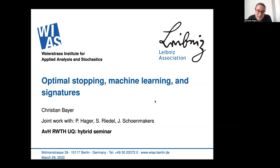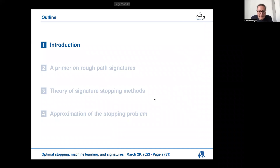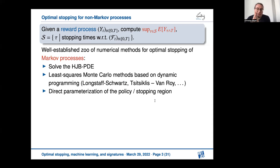The topic of this talk is to use signatures for optimal stopping problems. I also want to give an introduction to the topic of signatures itself, and in particular in the context of machine learning. As a kind of introduction, what are we trying to do in this talk? We are given a process y, a reward process, and we're trying to solve the associated optimal stopping problem.